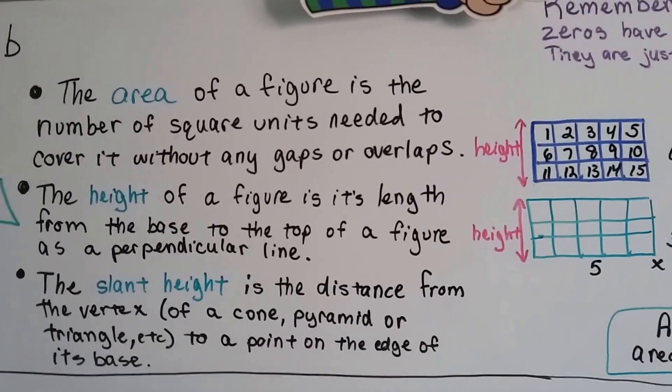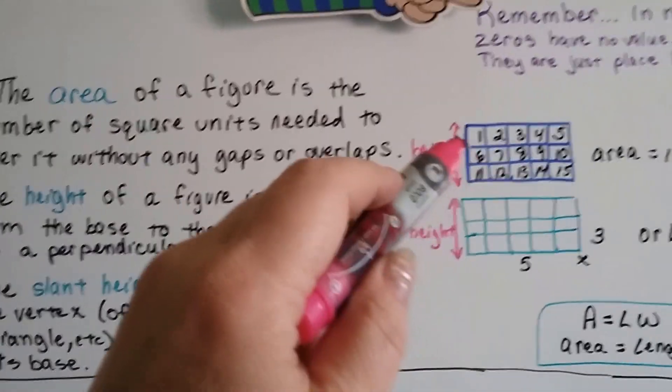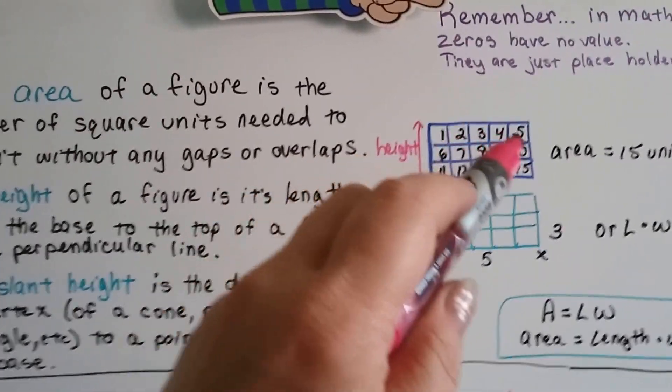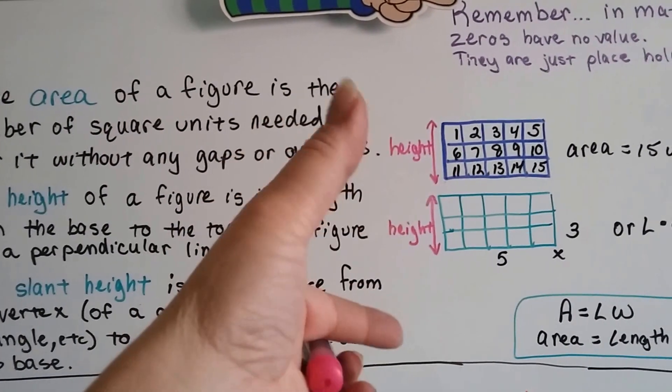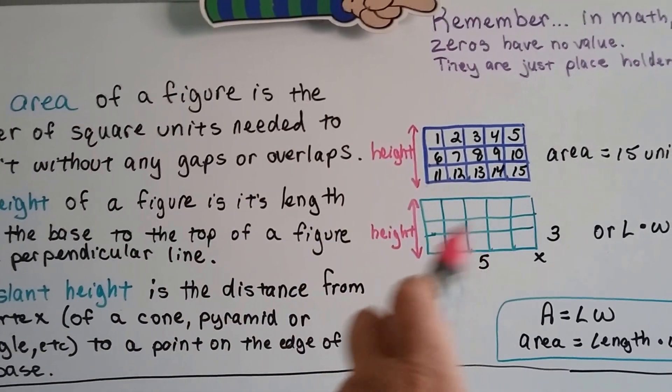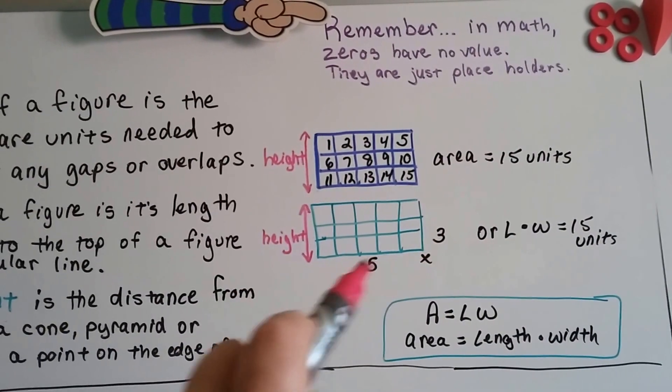As we said in 12.4a, the area of a figure is the number of square units needed to cover it without any gaps or overlaps, like here. There's 15 units here. Now this is not a fat figure that's 3D. This is a flat figure like a sheet of paper, and its area is the length times the width.